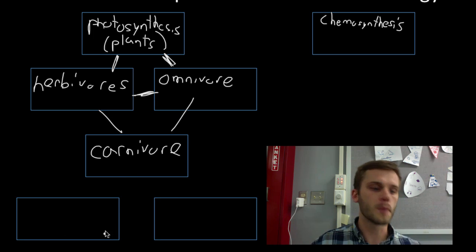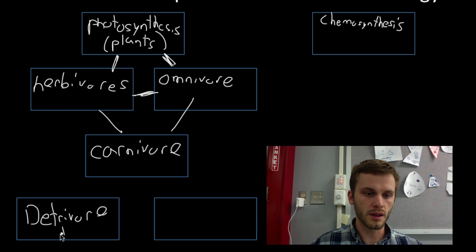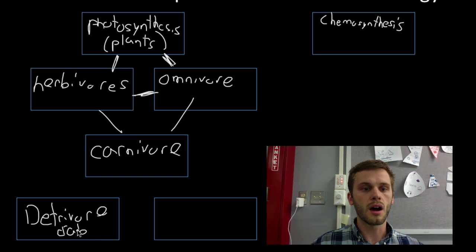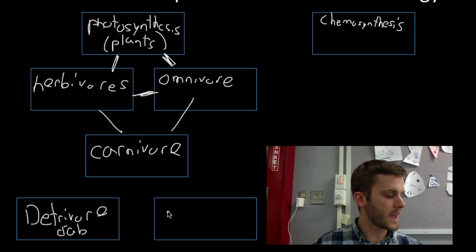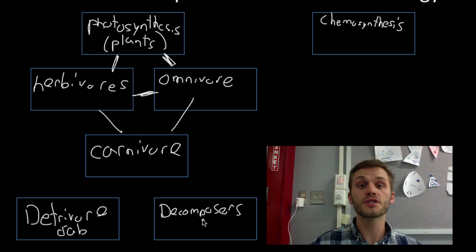The next two ones, you haven't heard about them as much. One of them is called a detrivore. A detrivore is a creature that feeds on dead animal remains. An example of this would be a crab. Crabs often feed on dead things, so detrivores are also consumers. Another one that you probably haven't heard of are called decomposers. Examples of decomposers are things like fungi and bacteria, and what they do is they break down organic matter.